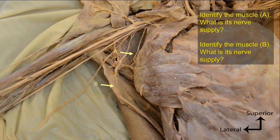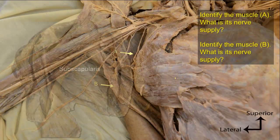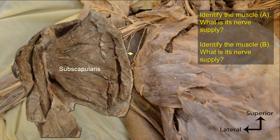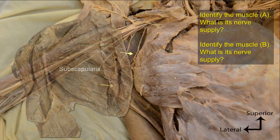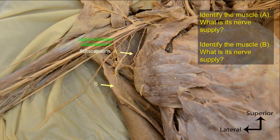Identify muscle A — what is its nerve supply? Muscle A is on the anterior surface of the scapula; it is the subscapularis muscle. It is supplied by the upper and lower subscapular nerves, which are not clearly shown here because they are very small nerves.